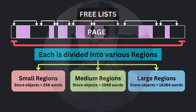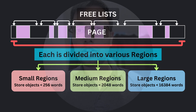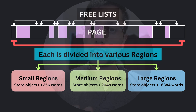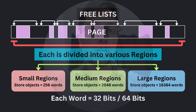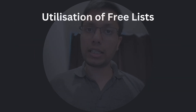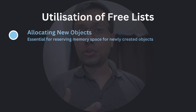These regions are defined by their size in words. Smaller regions have less than 256 words, medium regions have less than 2048 words, and larger regions have less than 16384 words. As for what words are — each word is typically around 32 bits or 64 bits depending on the memory architecture. The free lists are used for several scenarios. Of course, they are used to allocate new objects whenever needed.